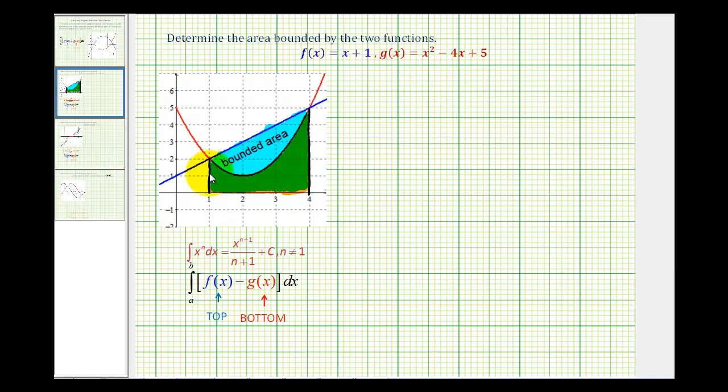To determine the x-coordinates of the points of intersection, we'd set x plus 1 equal to x squared minus 4x plus 5. We have a quadratic equation here so we'll set it equal to 0 and see if we can factor. So we'd subtract x and subtract 1 on both sides. So we'd have 0 equals x squared minus 5x plus 4. So we'd have x minus 4 times x minus 1.